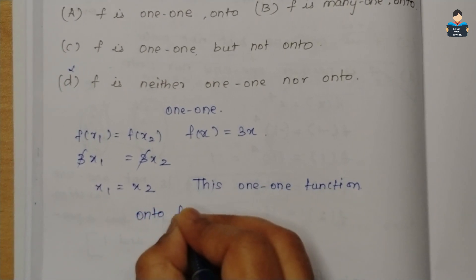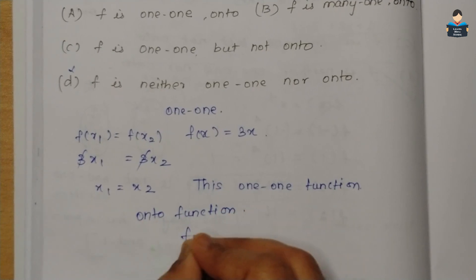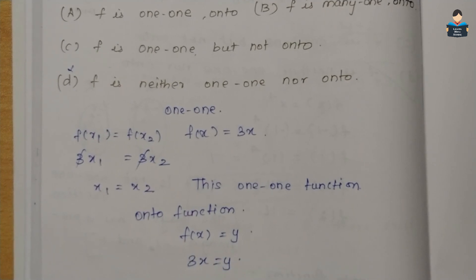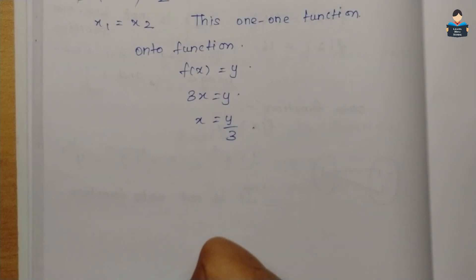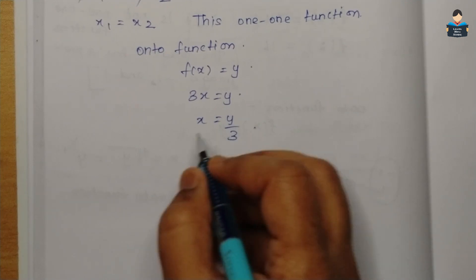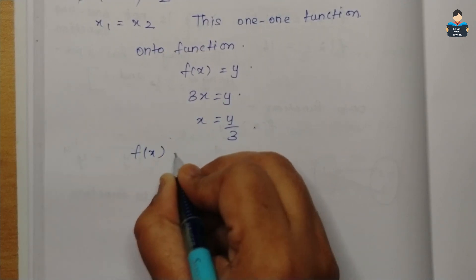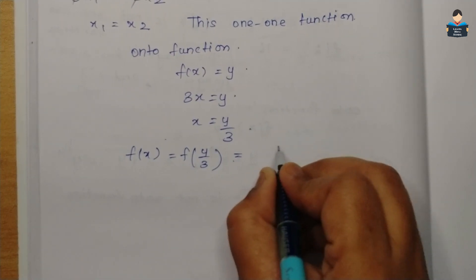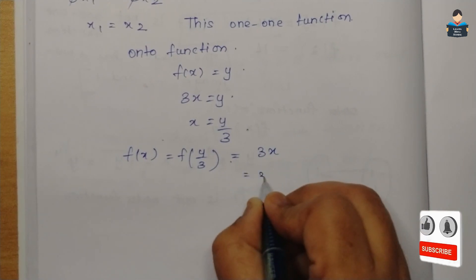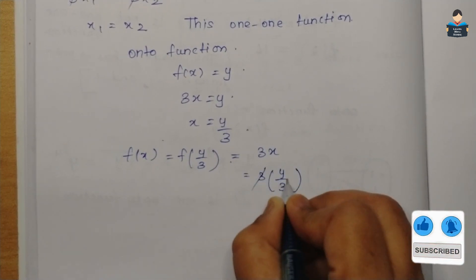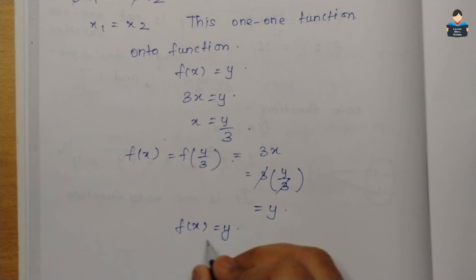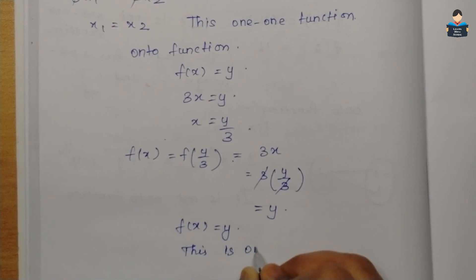For onto: let f(x) = y, so 3x = y, giving x = y/3. For any real number y, x = y/3 is also a real number in the domain. Substituting back: f(y/3) = 3(y/3) = y. So f(x) = y is satisfied. Hence f is onto.